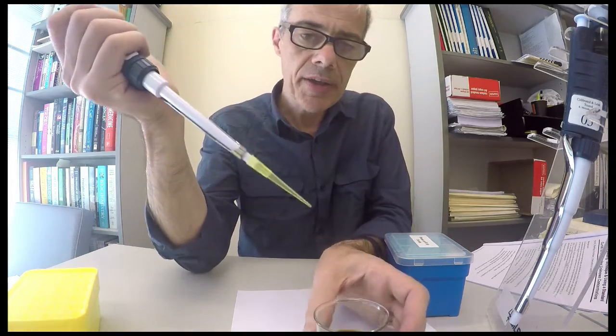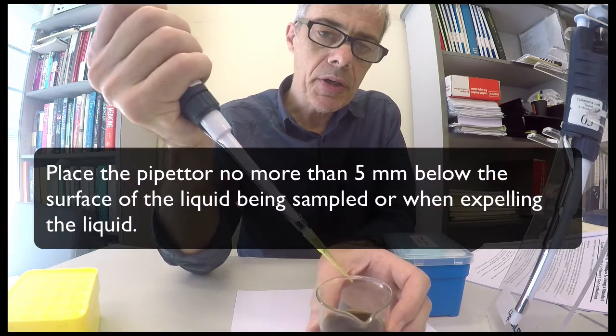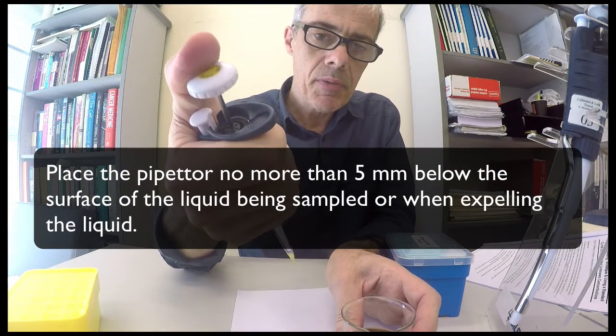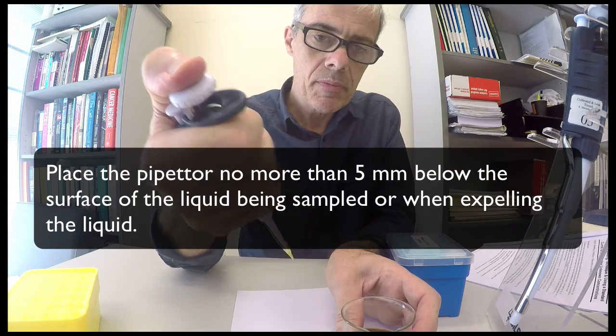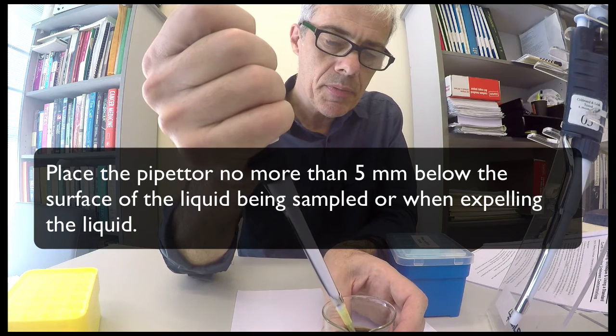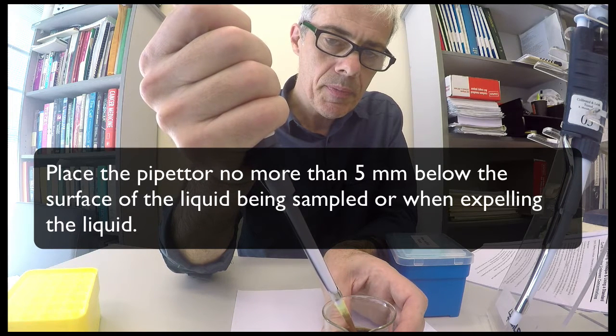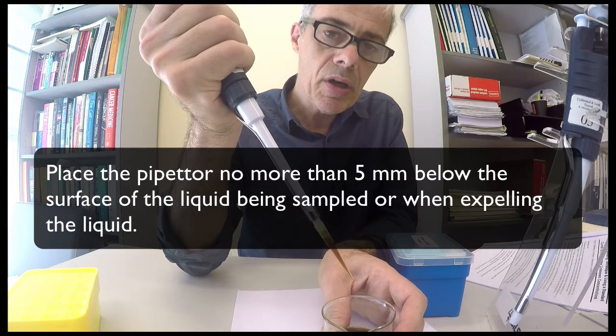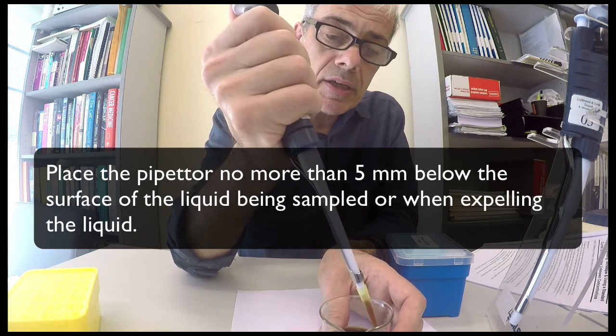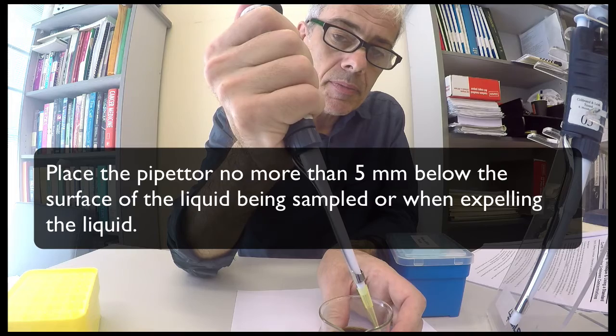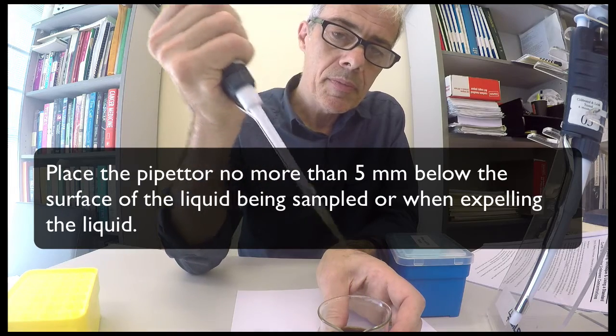So to summarize, to draw up solution you go down to the first stop, you immerse the tip, you draw it up slowly, and there's your 200 or 180 microliters, and then you can dispense the solution.